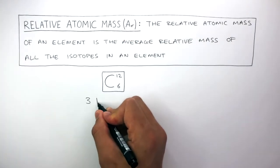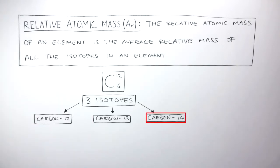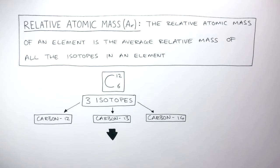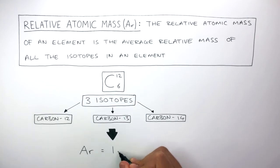For example, carbon has three isotopes: carbon-12, carbon-13, and carbon-14. The average relative mass of all three isotopes is 12. Therefore, the AR of carbon equals 12.